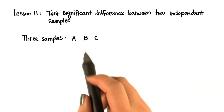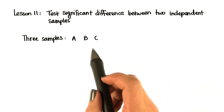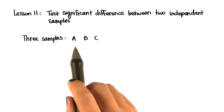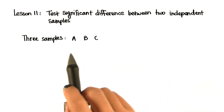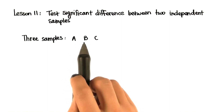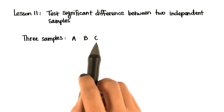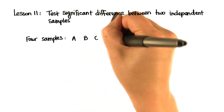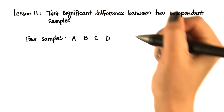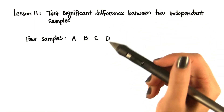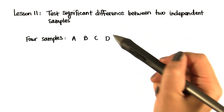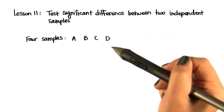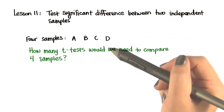If we have three samples, we would need to do three t-tests: A and B, B and C, and A and C. But what if we had four samples? How many t-tests would you need to compare all of them to each other?